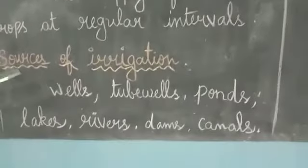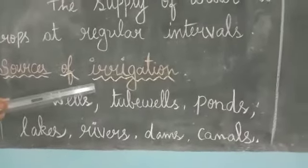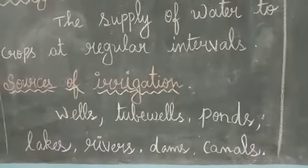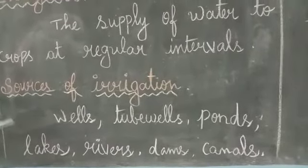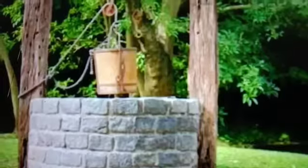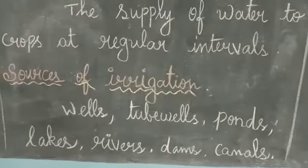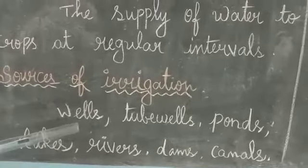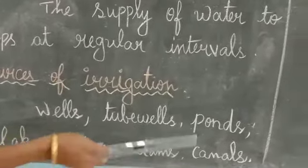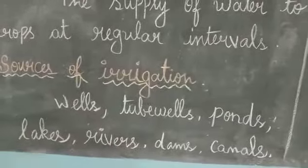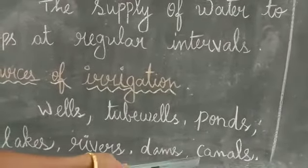Now let's see what are the sources of irrigation. The main sources of water for irrigation are wells, tube wells, dams, ponds, lakes, rivers, and canals.